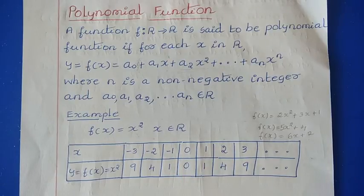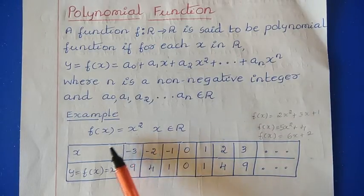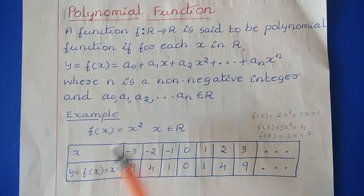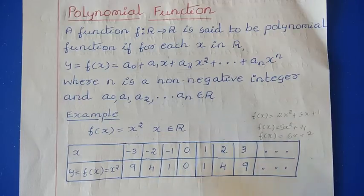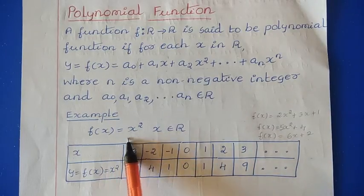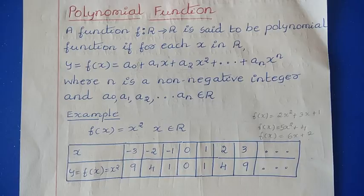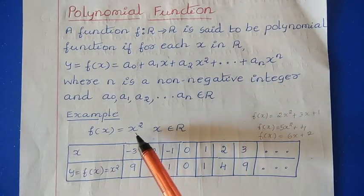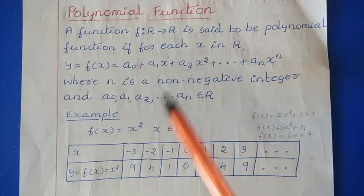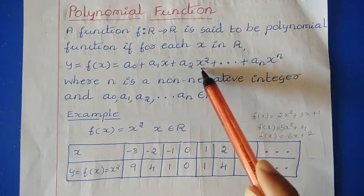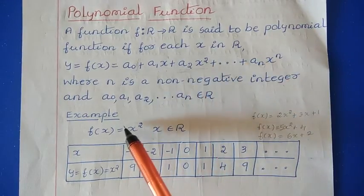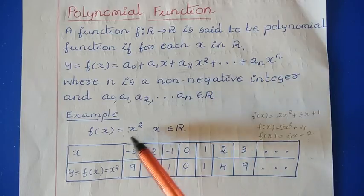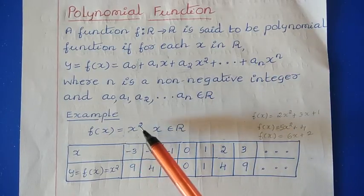Now let us understand this polynomial function by taking an example: f(x) = x squared. Here x is a real number, so the domain value is a real number. In this polynomial function we have only x squared, which corresponds to the term a2·x squared, where a2 is equal to 1. So 1 times x squared gives us a2·x squared.